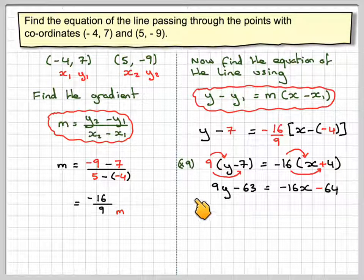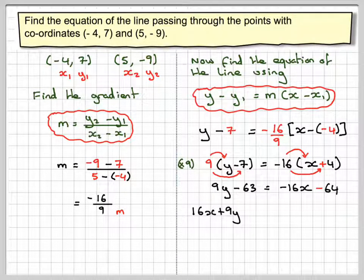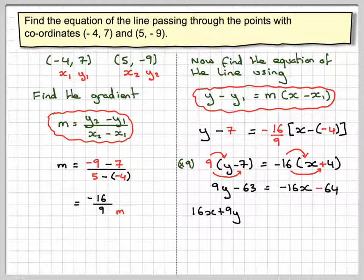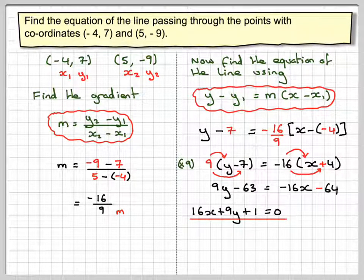Then we're going to take 16x plus 9y and then if we add 64 we're just going to get plus 1 is equal to 0.